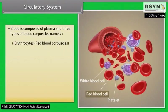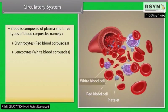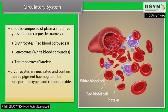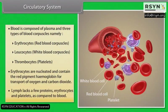Frogs have a hepatic portal system and renal portal system. The hepatic portal system is the special venous connection between the liver and intestine, while the renal portal system is the venous connection between the kidney and lower parts of the body. Blood is composed of plasma and three types of blood corpuscles: erythrocytes (red blood cells), leucocytes (white blood cells), and thrombocytes (platelets). Erythrocytes are nucleated and contain the red pigment haemoglobin for transport of oxygen and carbon dioxide. Lymph lacks a few proteins, erythrocytes and platelets compared to blood.